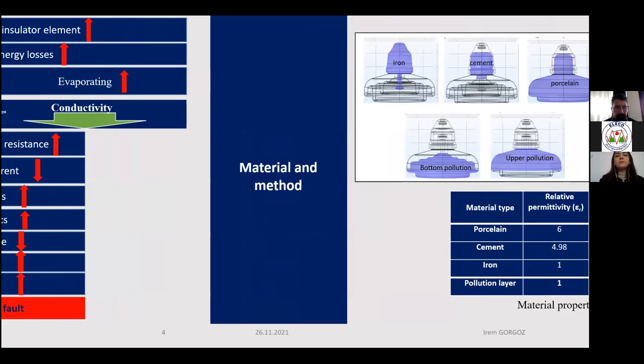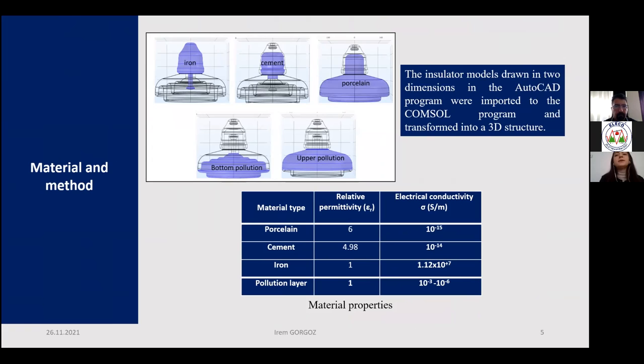The insulator models drawn in two dimensions in the AutoCAD program were imported to the COMSOL program and transformed into a three-dimensional structure. We see the material definitions of the fog-type insulator. The normal type insulator has the same definitions. Electrical conductivity and relative permittivity values of porcelain, cement, upper and bottom pollution layer, and iron are given in a table. The upper and bottom pollution layer is modeled by a layer of 0.5 mm thickness.